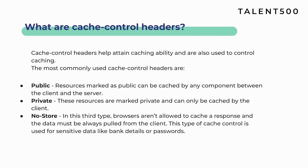The next question is: what are cache-control headers? Cache-control headers help you attain caching ability in a web architecture and are used to control the caching. There are three types: public — resources marked as public can be cached by any component between the client and server. Private — resources marked private can only be cached by the client. No-store — browsers aren't allowed to cache a response and data must always be pulled fresh every time.